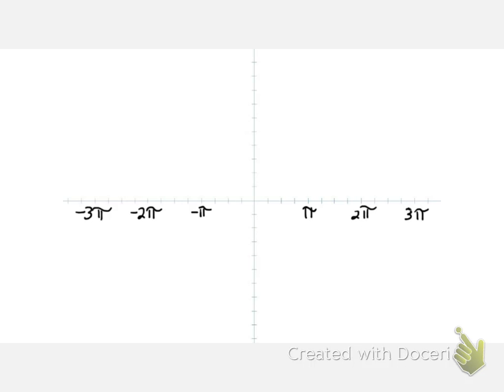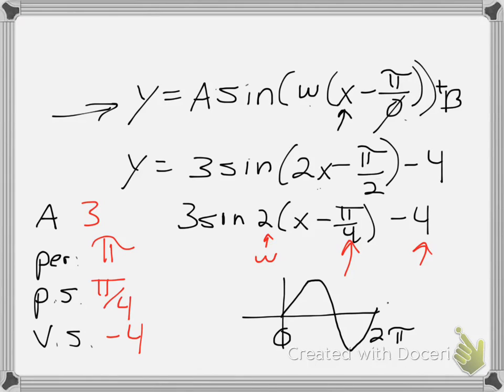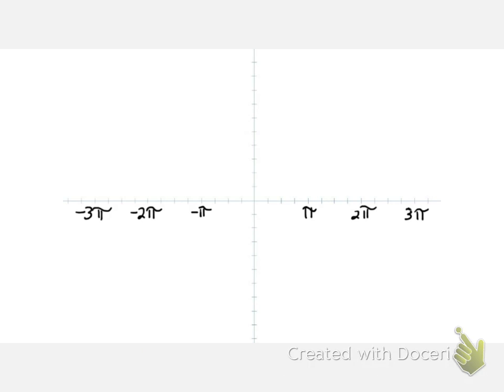First of all, let's define our parameters. Amplitude of 3, vertical shift of 4. So normally that would mean, if here is 3 and here is negative 3, that would be our normal period. Now we have to adjust that for our vertical shift. So I'm going to move it down 4 units.